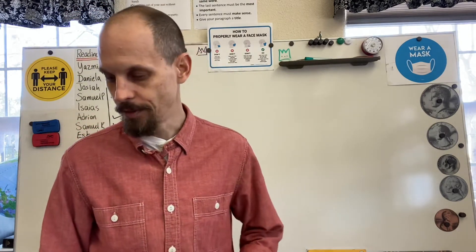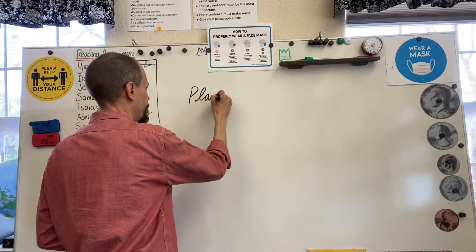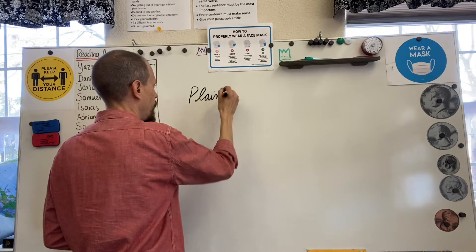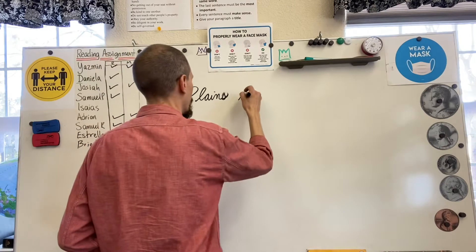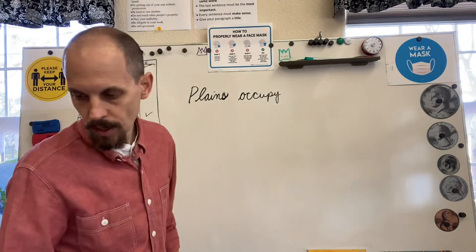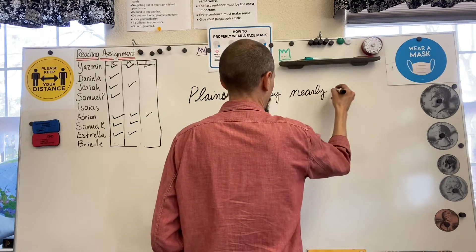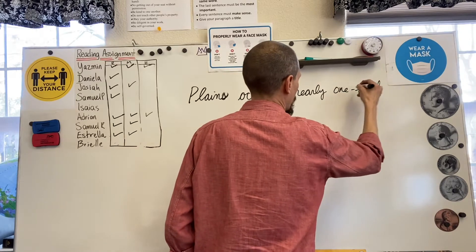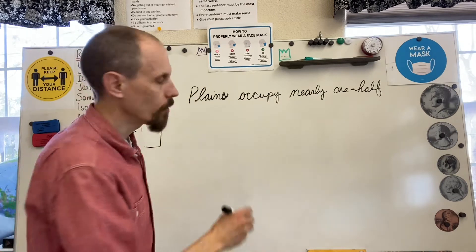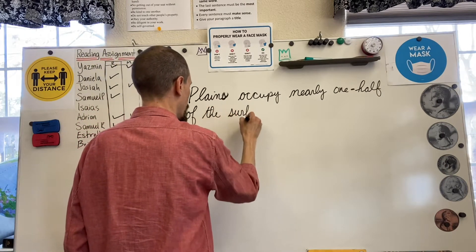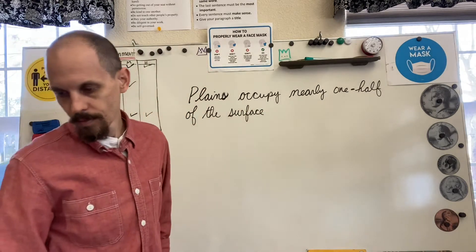There are three kinds of plains on the planet — only three that we know of. Let's identify first what a plain is. It's not like saying a show was 'plain' or an egg was 'plain' — that's not what it means. And it's not like an airplane, it's spelled differently. Plains occupy nearly one half — notice the dash — half of the surface of the continents.